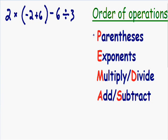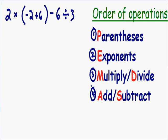Here is our list of order of operations. First on our list is parentheses — the first thing we must do is get rid of the parentheses. Second on our list is exponents. After parentheses, you must get rid of the exponents. Third is multiplying and dividing, and fourth is adding and subtracting.